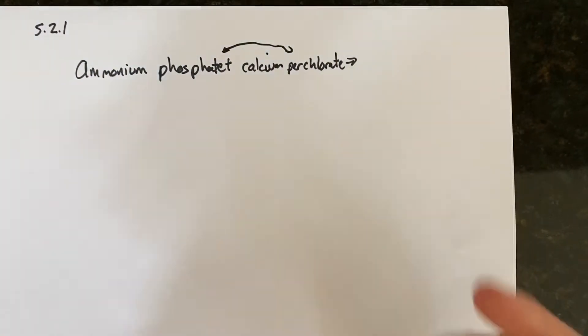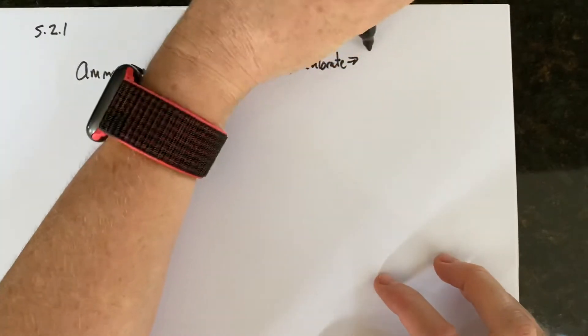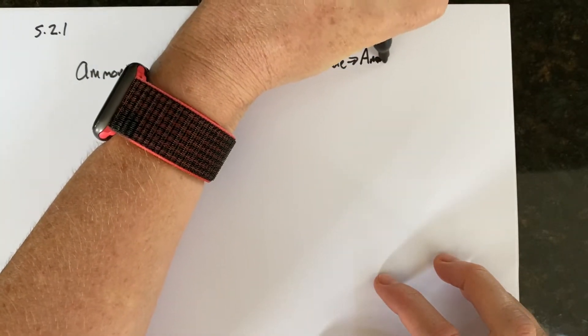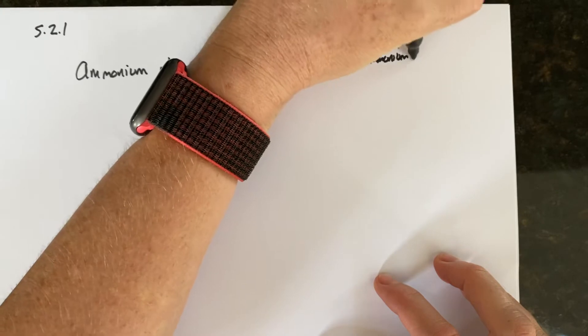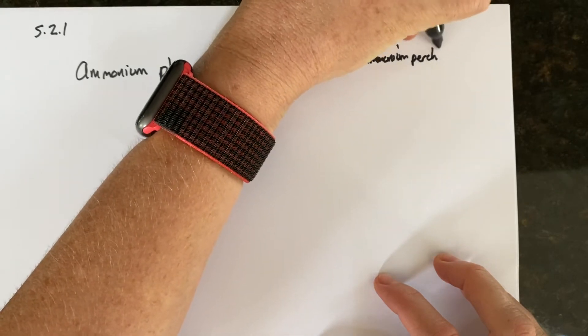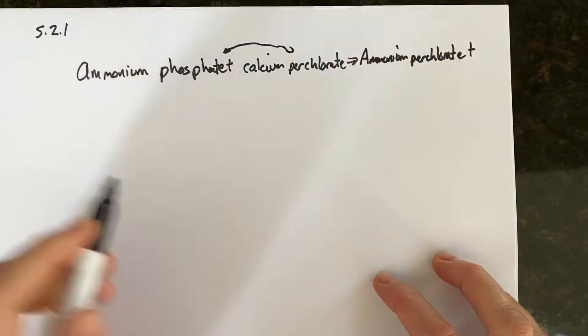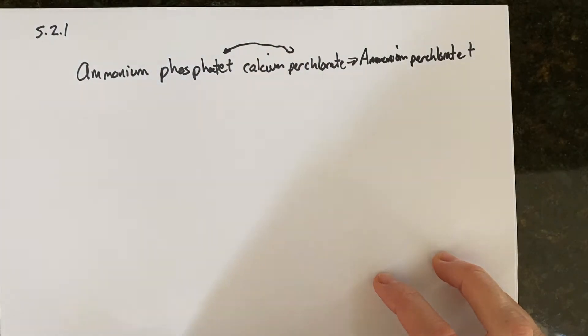Phosphate and perchlorate will essentially switch to ammonium perchlorate, plus calcium phosphate.